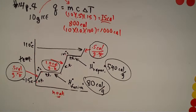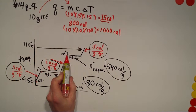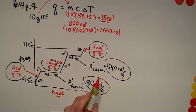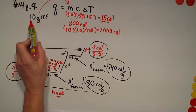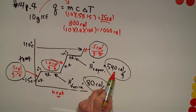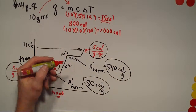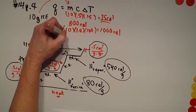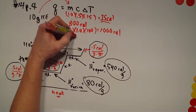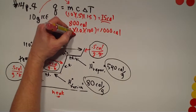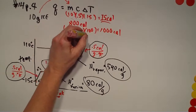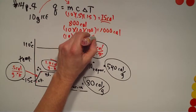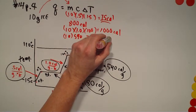Now we're at the boiling point and we have to account for the heat of vaporization. For every gram we have to add 540 calories. That's easy to do: 10 times 540, which gives us 5400 calories.